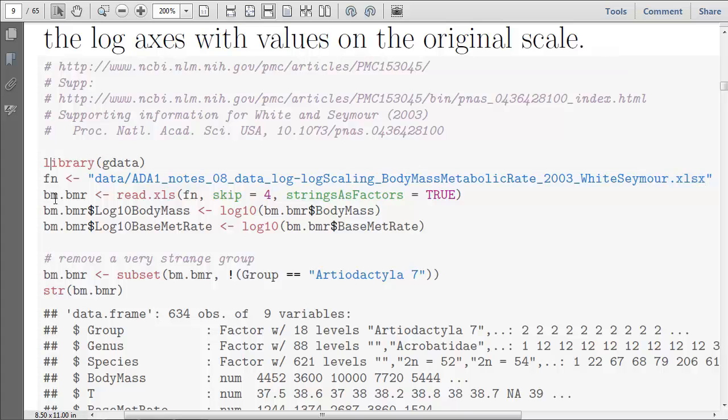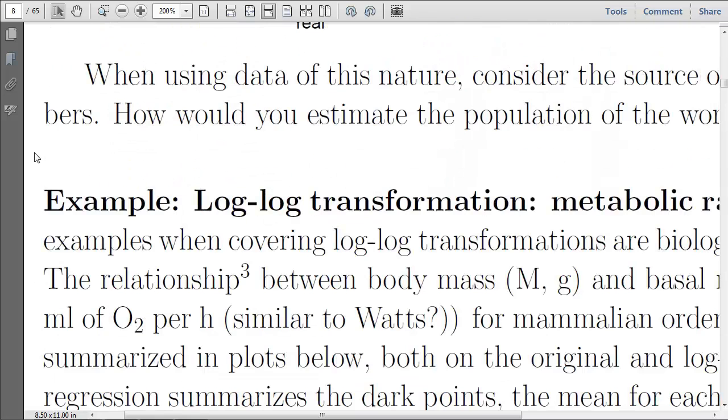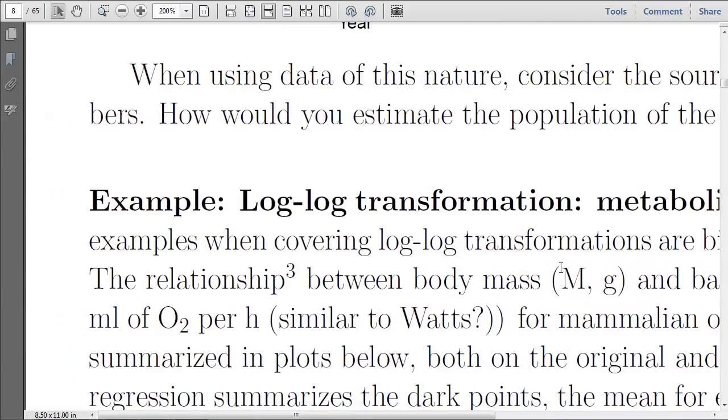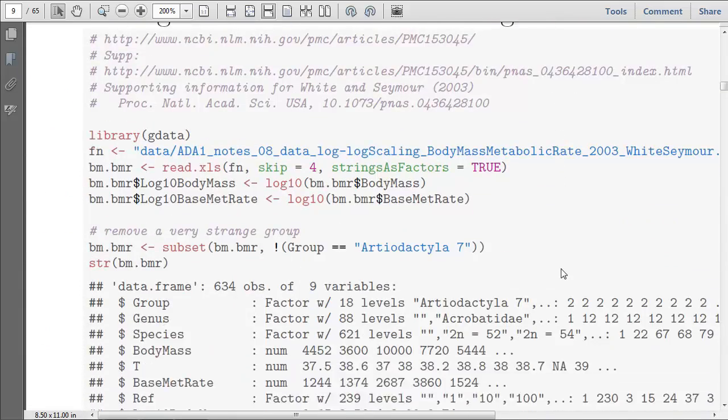So this is the file name, and I read the data in, and I've got some comments or some extra lines at the top that I'm skipping. And once I read in the data, which I'm calling BM.BMR, probably body mass and basal metabolic rate, BMR. Usually the things I do make sense to me if I can figure it out. So I've read in those values. I've taken the log of body mass and the log of the basal metabolic rate, and then I'm ready to go.